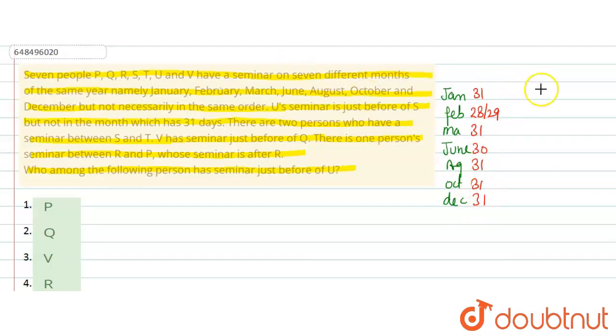So, yahan pe conditions create karenge. Hum dono condition le ke chalenge. Given U's seminar is just before S. So, U ka seminar turant S se pehle hoga. Lekin 31 days wale month me nahi hoga. So, U ka seminar yahan ho sakta hai February me. Yaha, phir U ka seminar June mein ho sakta hai.